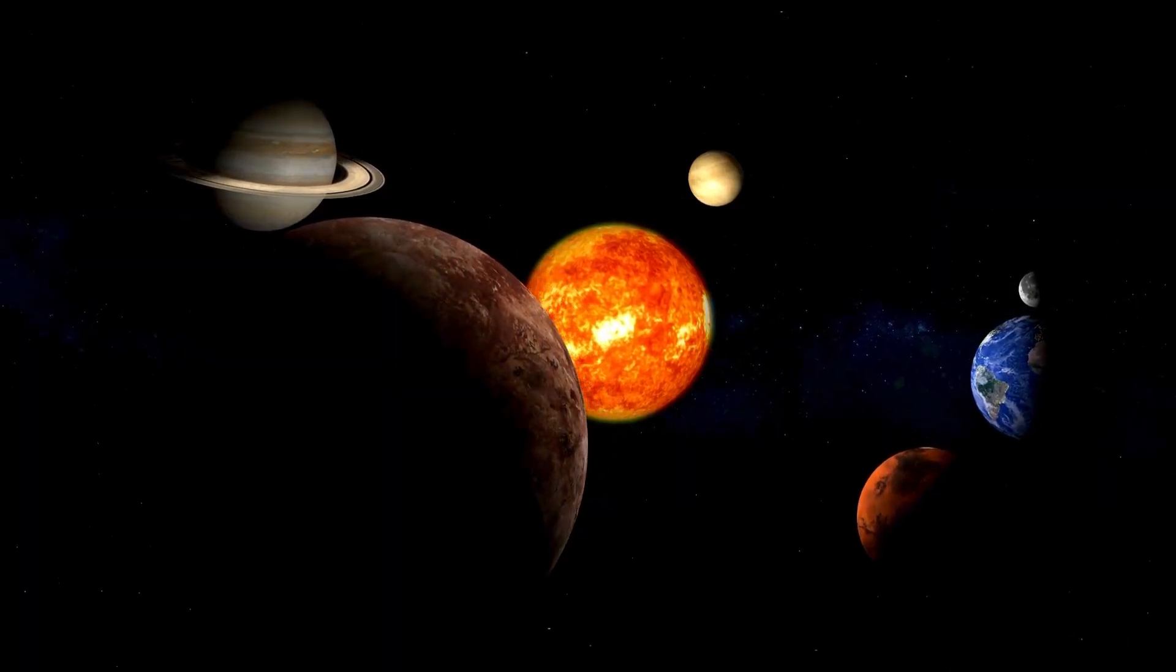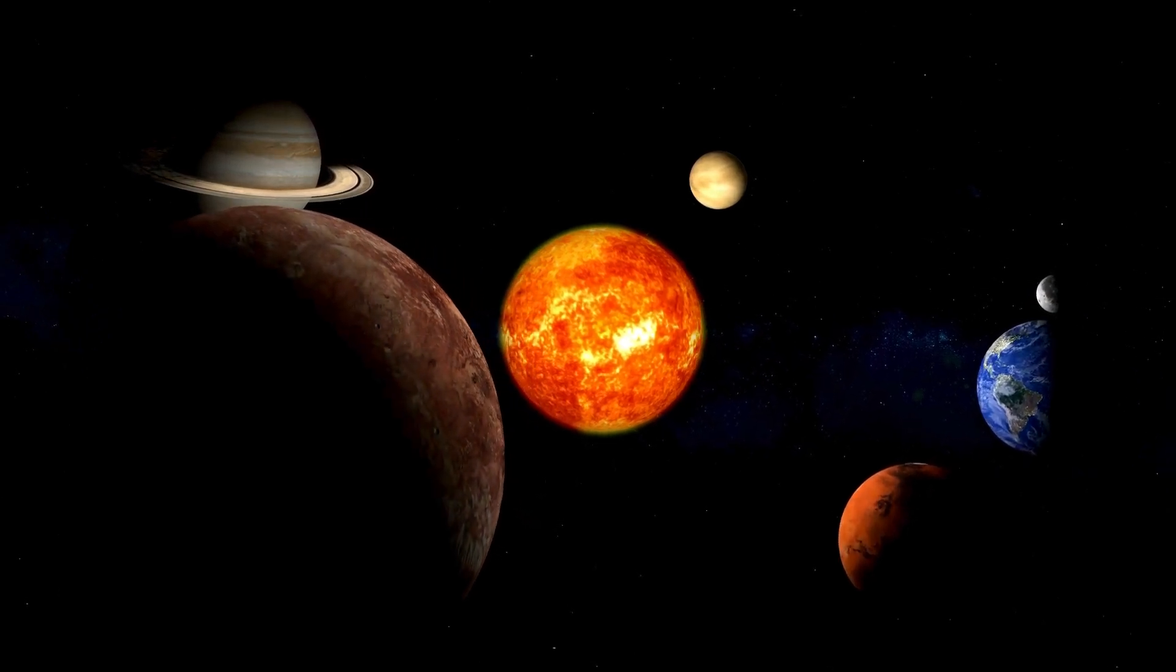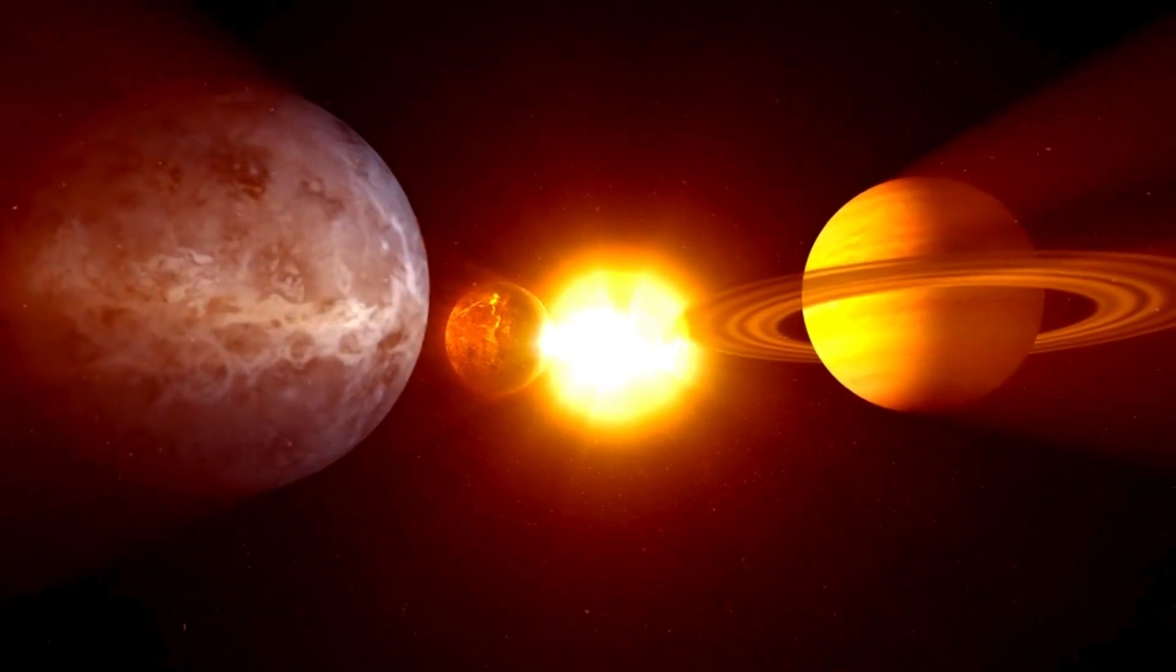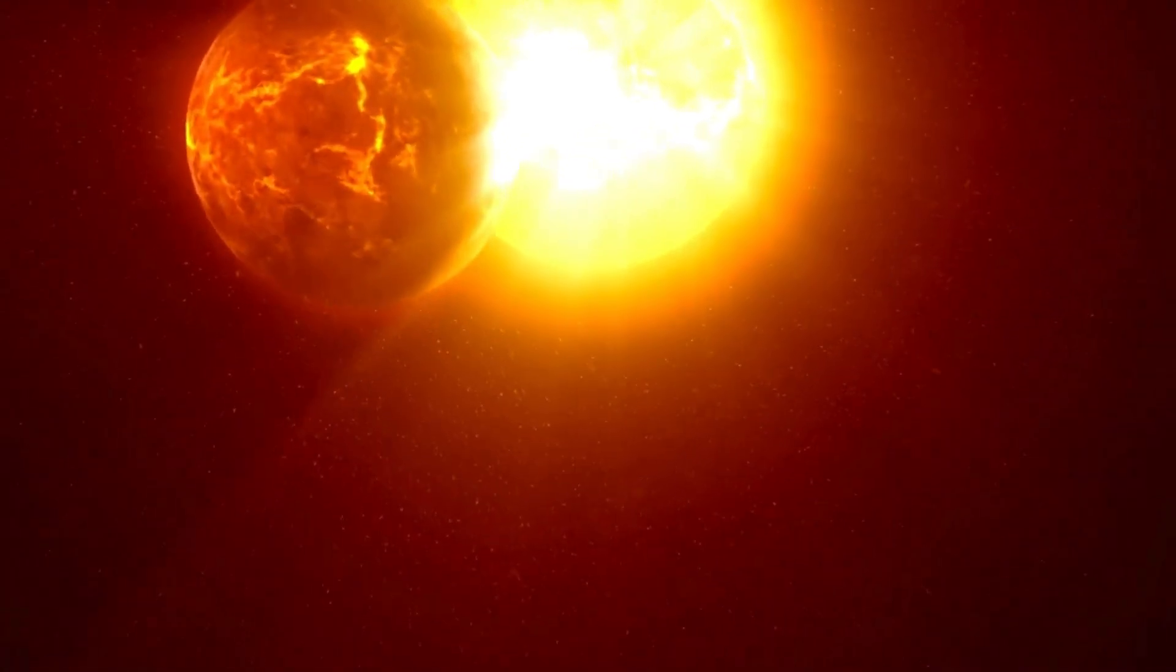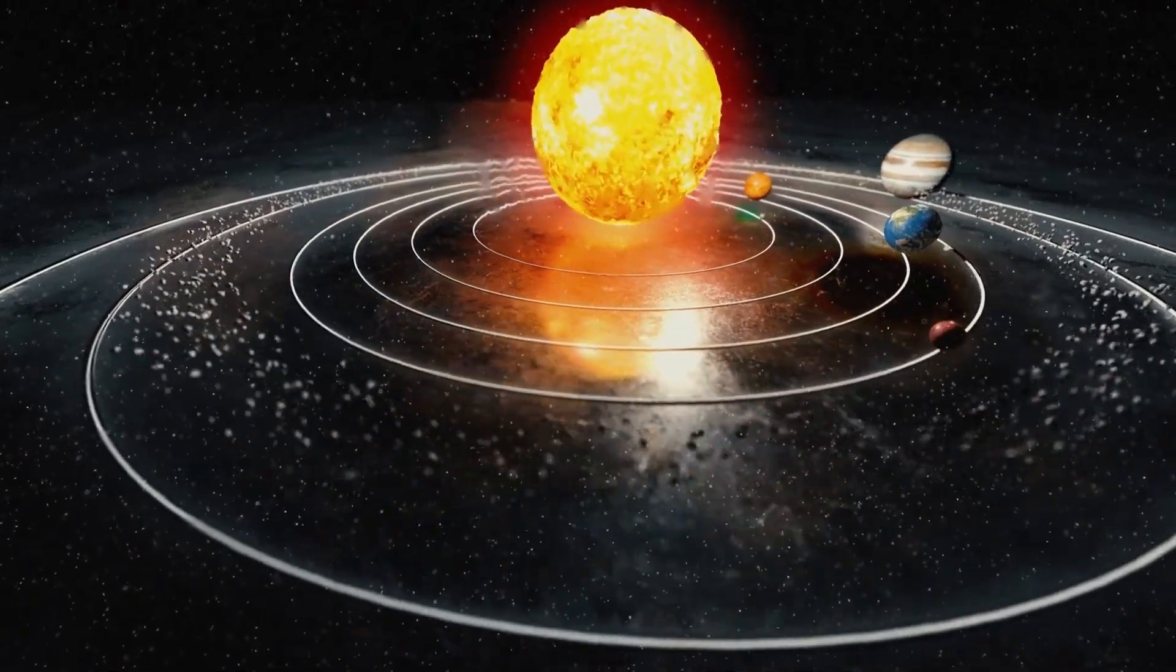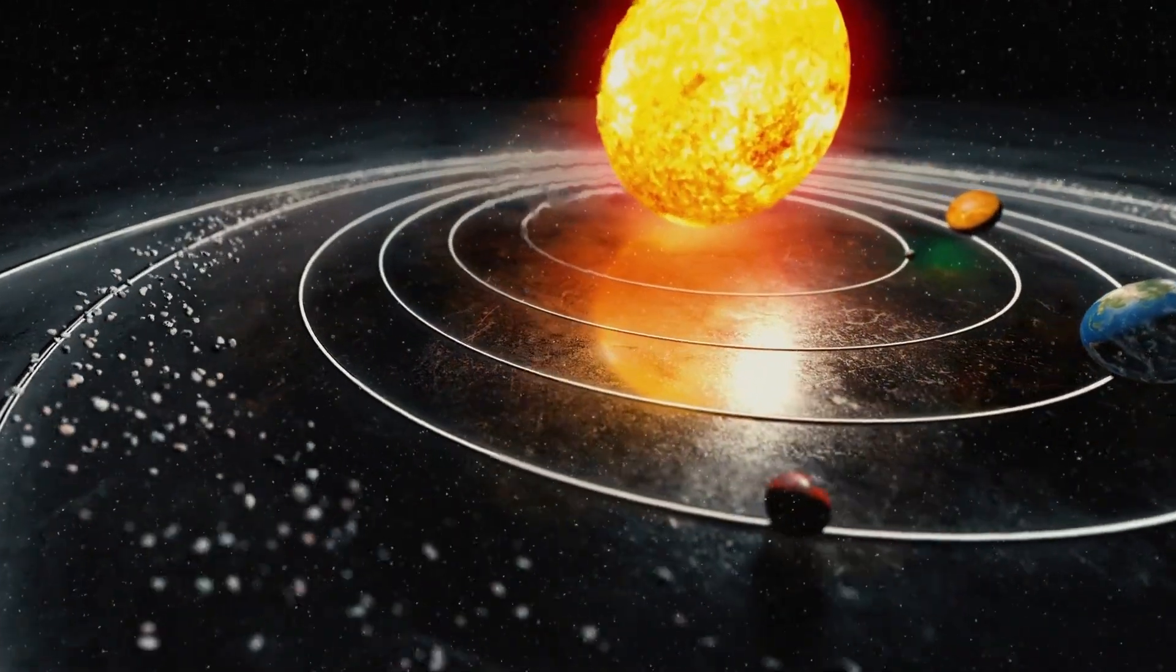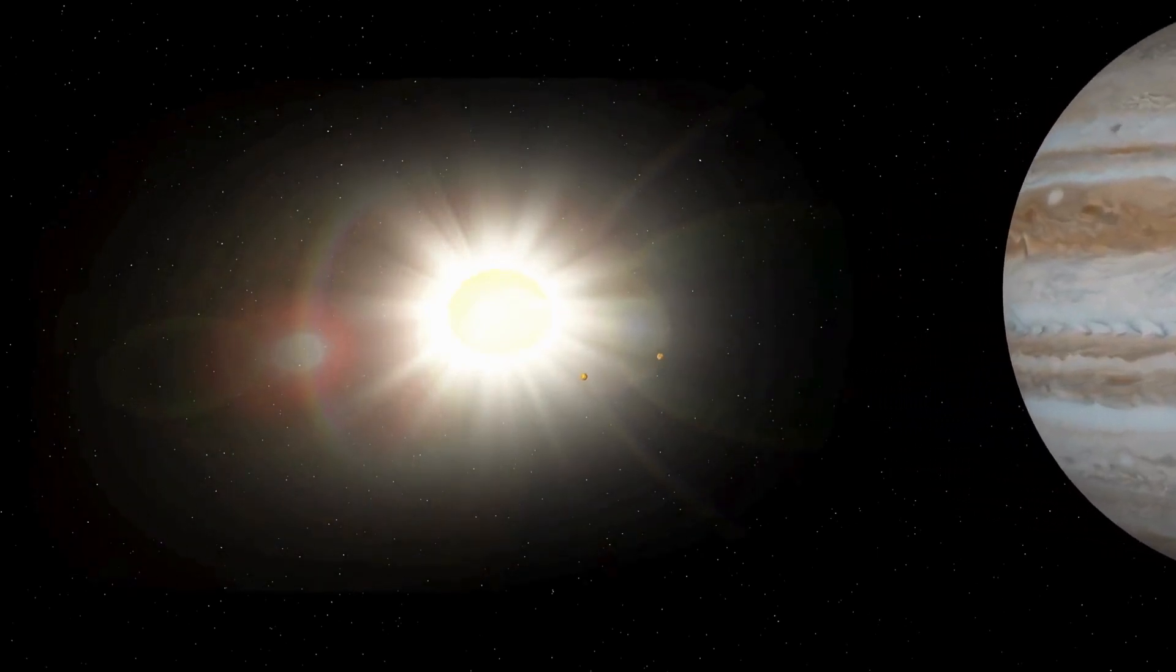Pluto's journey around the Sun is unlike that of any other planet in our solar system. It requires a stunning 248 years to complete a single orbit, meaning that since its discovery in 1930, it hasn't even finished one full revolution yet. The intrigue doesn't stop there. Pluto's orbit is marked by its particularly elongated shape, deviating greatly from the nearly circular orbits of the major planets.